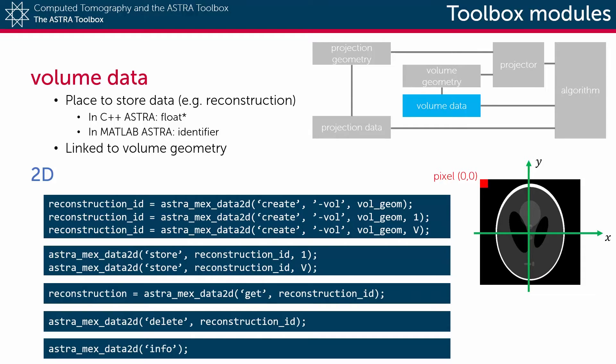By default the newly created Astra object is filled with zeros, but this behavior can be changed by adding a fourth parameter. If you add a scalar value such as 1, then each pixel value will be set to 1. Or if you add a MATLAB matrix full of data, then that data will be copied into the Astra memory. Of course the size of that matrix does have to match the size of the volume as specified in the volume geometry.